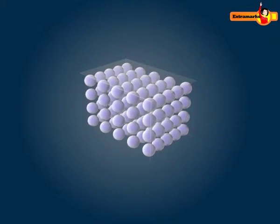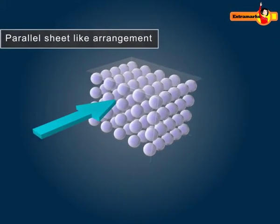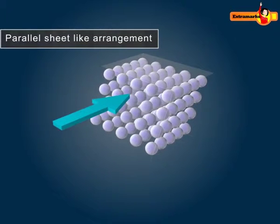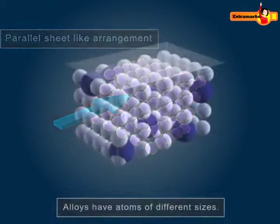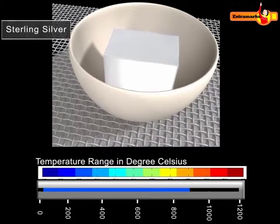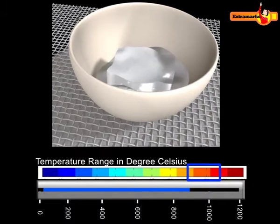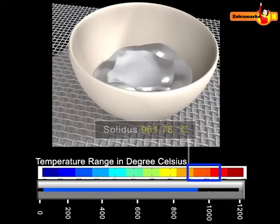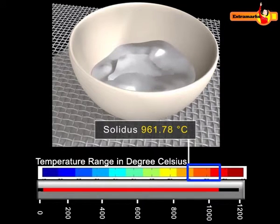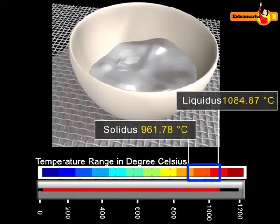These metal ions are arranged in a parallel sheet-like arrangement that can slide over one another. Alloys have a melting range in which the material is a mixture of solid and liquid phases. The temperature at which melting begins is called the solidus, while the temperature at which melting ends is called the liquidus.